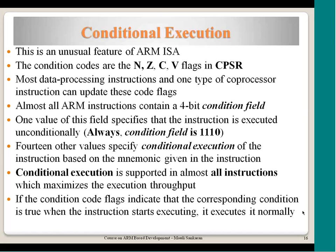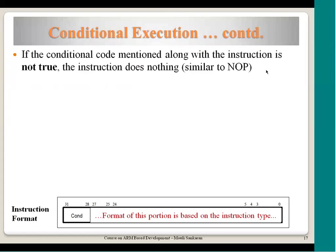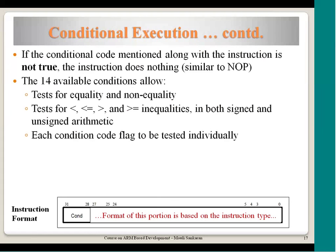Other 14 possible values of the conditional field give you different conditions. Conditional execution is supported in almost all instructions. If the condition code flag indicates the corresponding condition is true, that instruction starts executing; otherwise it comes to the execute stage, checks the condition code flag, and if it doesn't match it will be a no-op — nothing changes in the CPSR or any register content. One cycle gets used but nothing happens. The equality conditions can be equal, not equal, less than, less than or equal, and additional values, and accordingly a particular condition is evaluated.